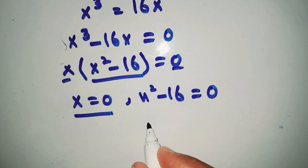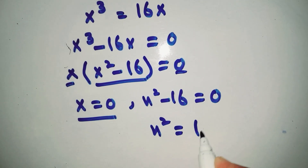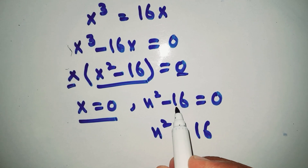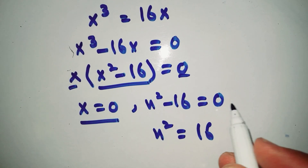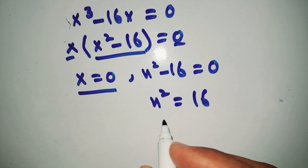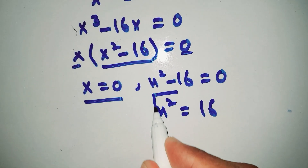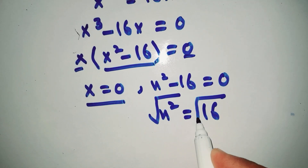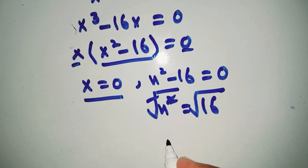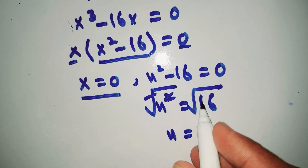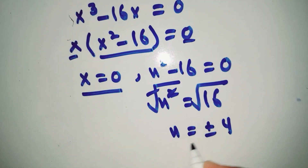We write x squared is equal to 16, because moving minus 16 to the other side of the equal sign makes it plus 16. Now to find x, we take the square root of both sides. The square and square root cancel, giving x is equal to the square root of 16, which is plus or minus 4.